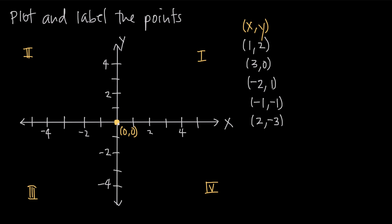The other thing to know about the Cartesian coordinate system is that the axes divide the grid into four quadrants. We start in the upper right-hand corner — this is the first quadrant — and then we move counterclockwise: second quadrant, third quadrant, and fourth quadrant. You need to know which quadrant we're talking about when we say the first, second, third, or fourth.